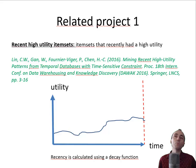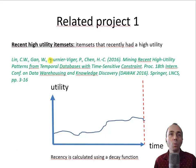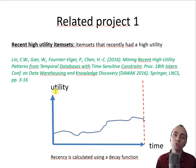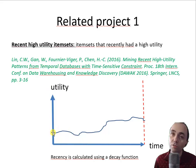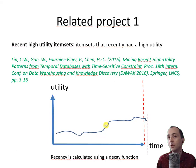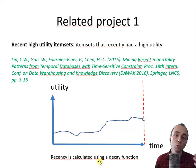Now I want to talk about some related projects to give you an overview. In one work, we look at recent high utility itemsets — we want to find sets of items bought together that recently make a lot of money, even if in the past they did not. Here you can see a chart with time on one axis and utility (like money) on the other. We want to find sets of items that recently have high utility. To do this, we use a decay function.